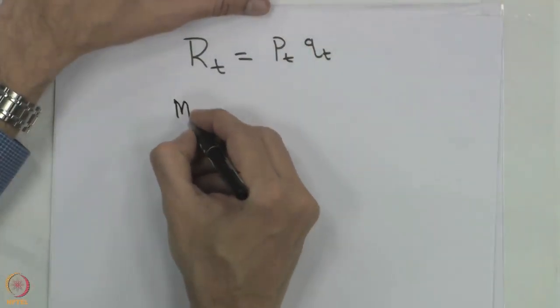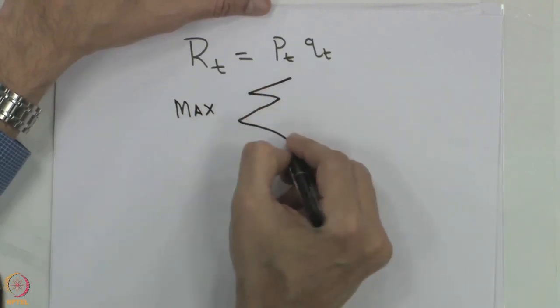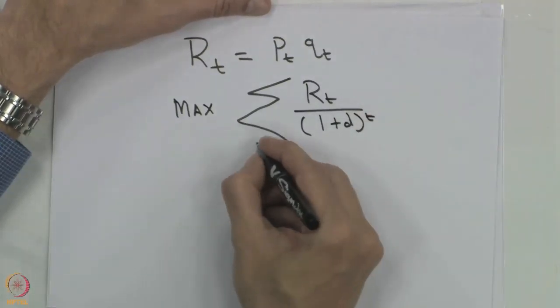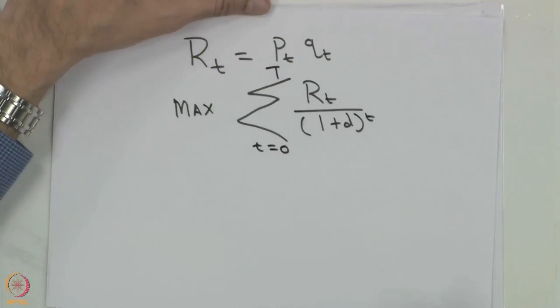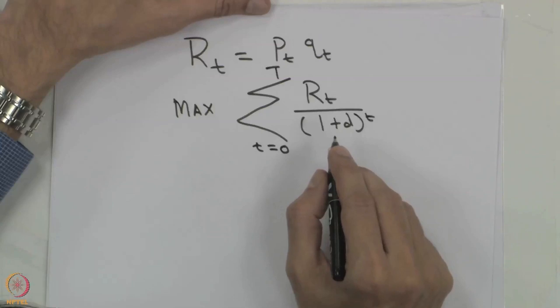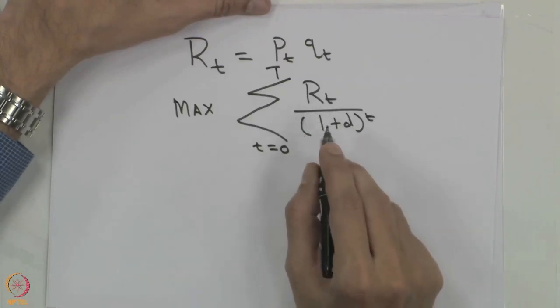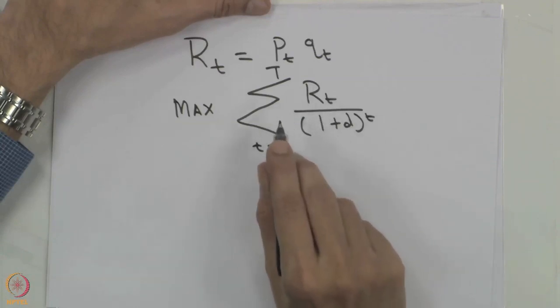This is called the oil shock, and that is the point at which all countries started looking at energy independence, energy efficiency, and energy conservation. From a monopolist point of view, we want to maximize the discounted sum of revenue R_T divided by (1 + D) raised to T, from T equals 0 to T. The monopolist is able to influence the quantity being released overall and hence is also able to influence the price.